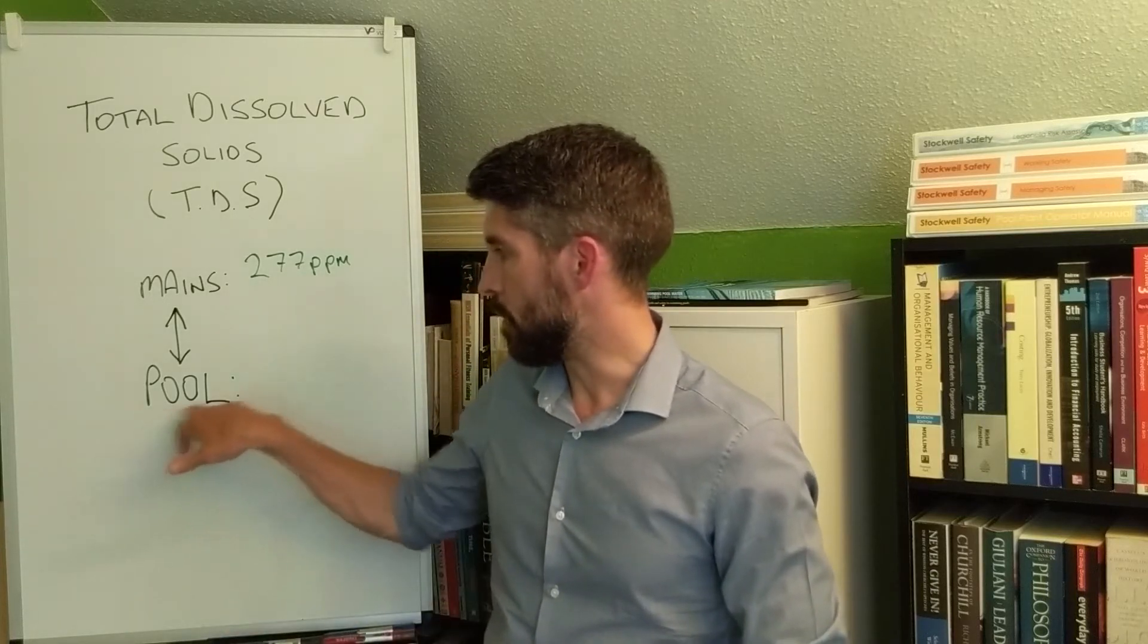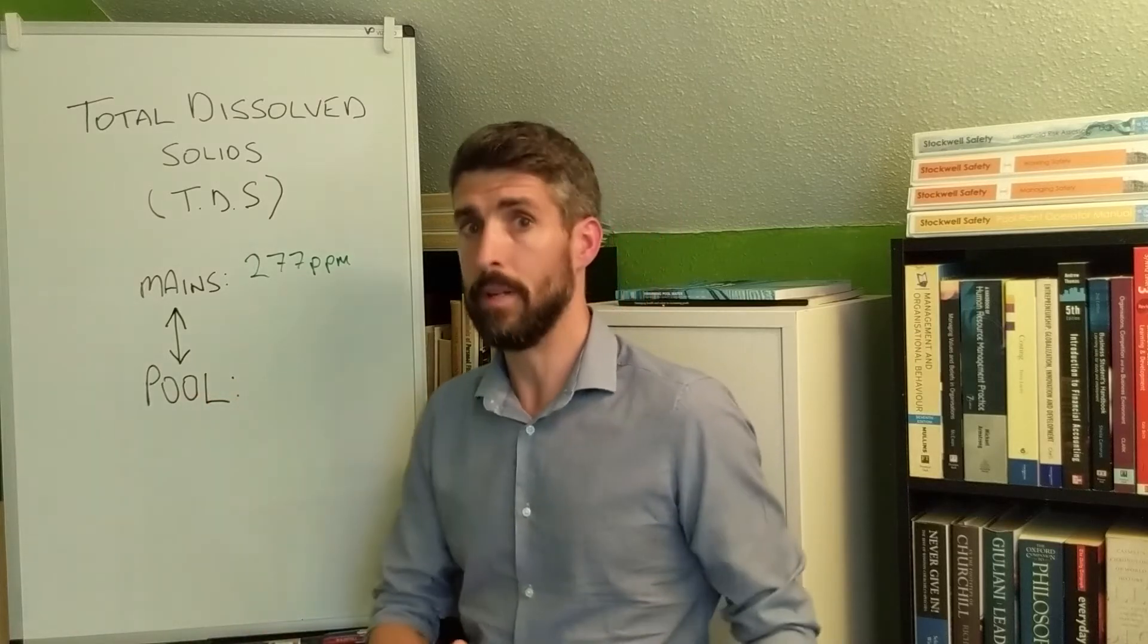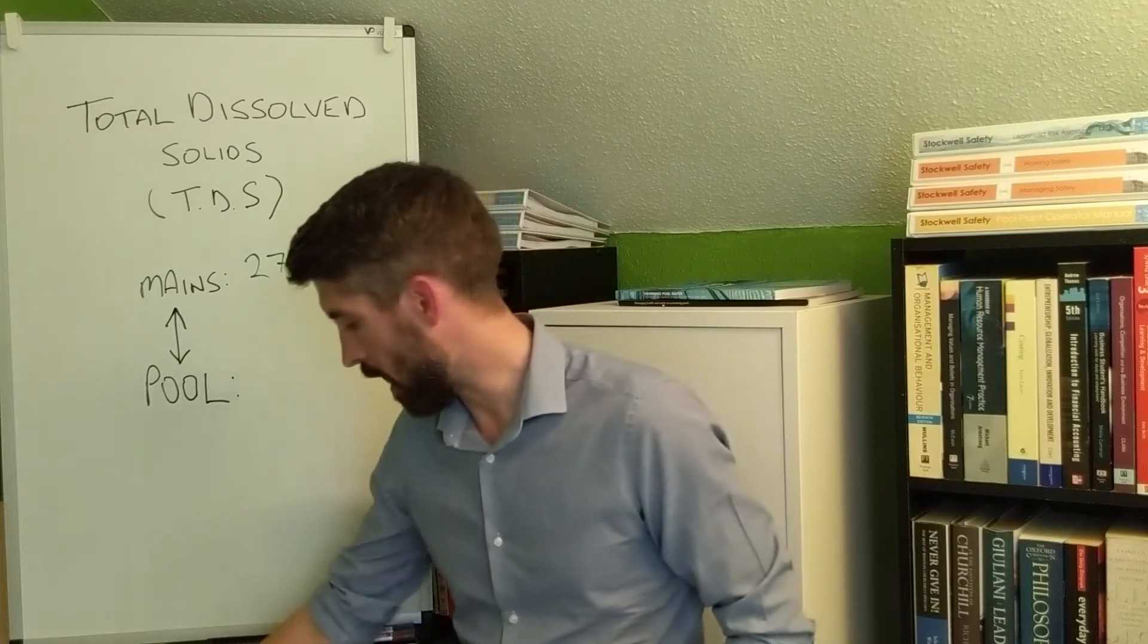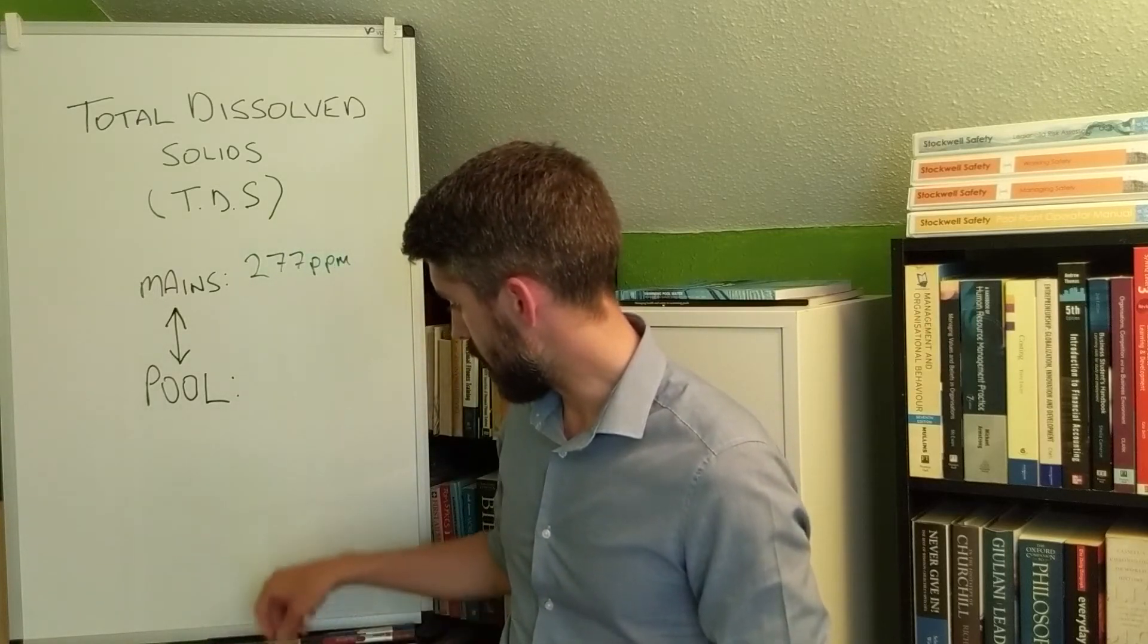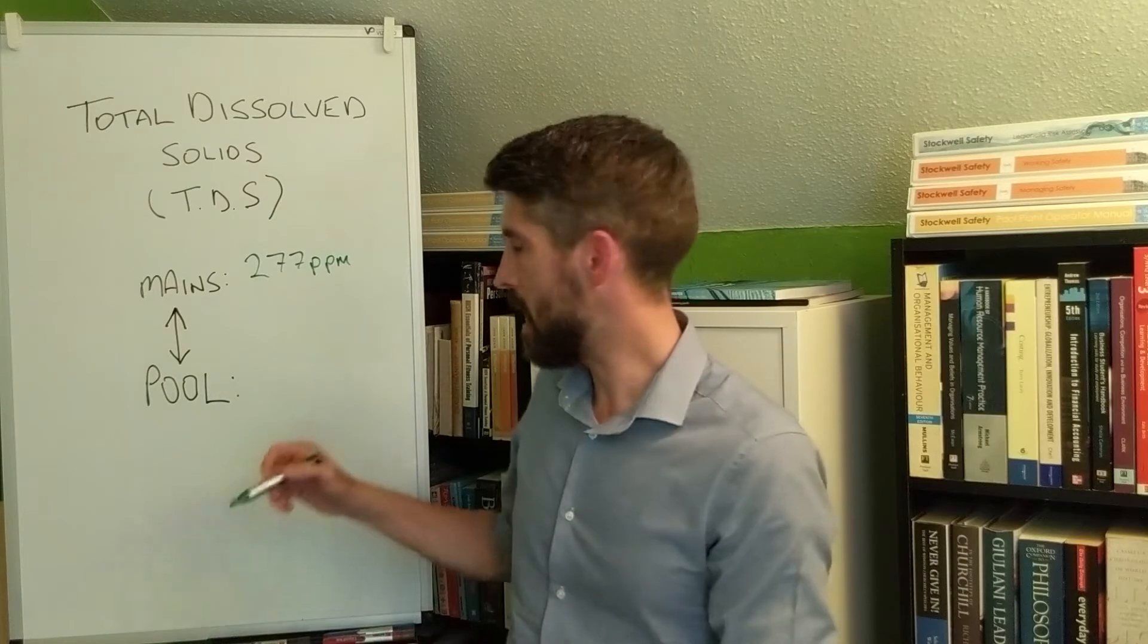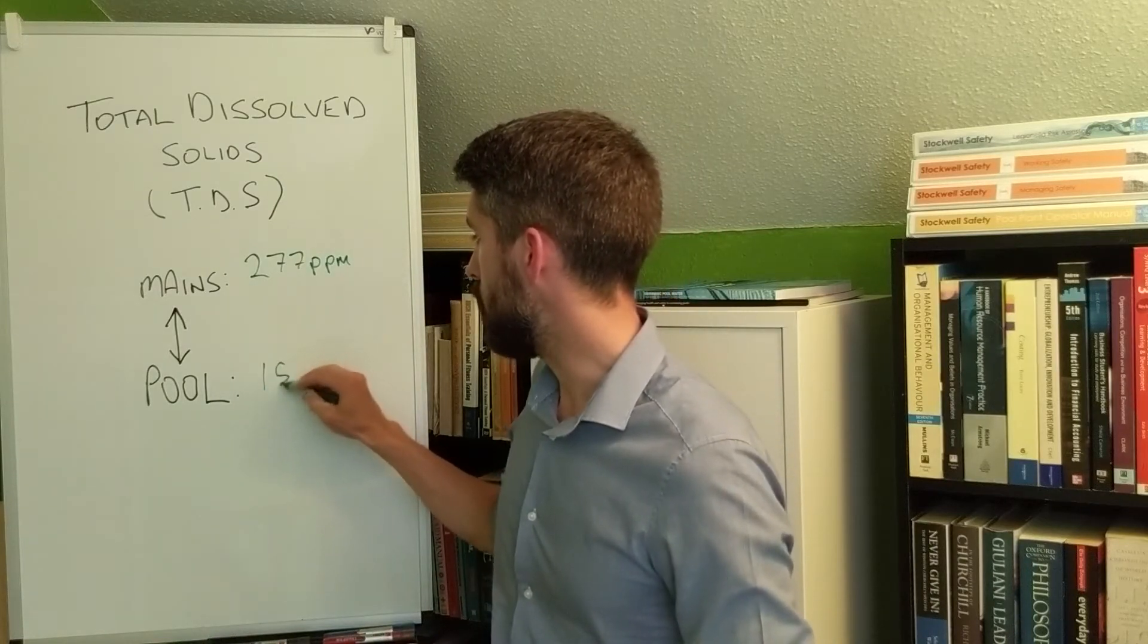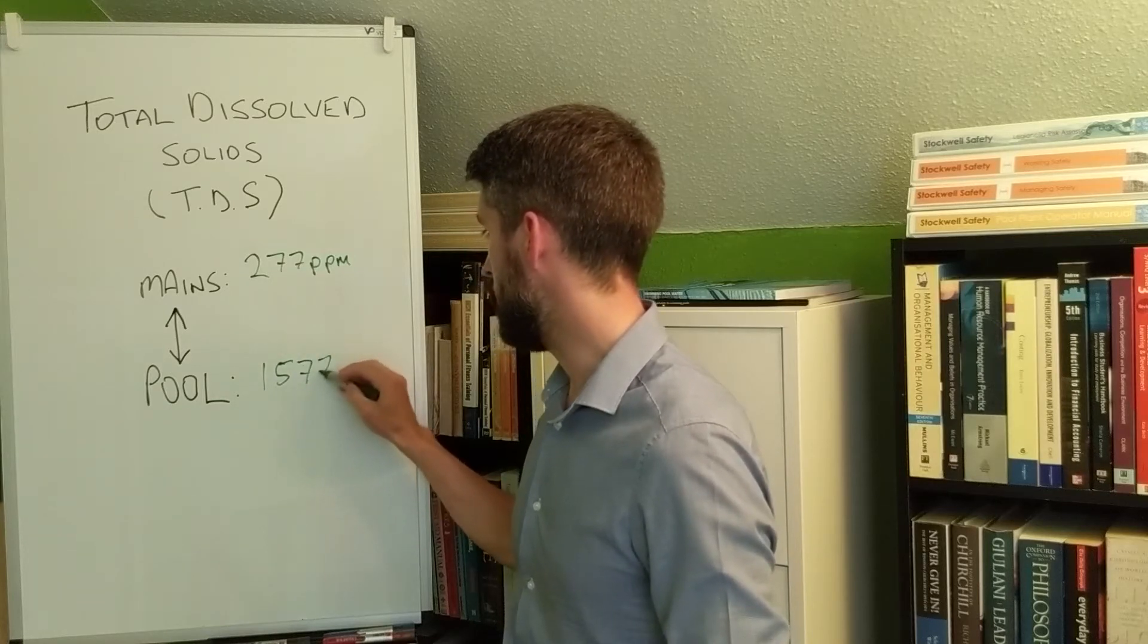But what you do is you take another sample from the pool. I don't happen to have a pool here that I can take a sample from, but let's just use an imaginary figure. Let's say that the water in your pool you measure in exactly the same way and you get a reading of 1577, for example.